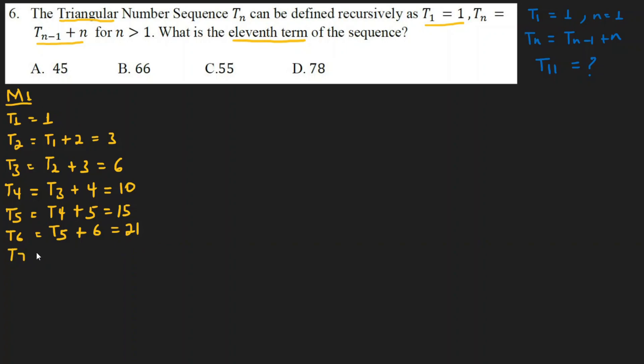T7 equals T6 plus 7, so 21 plus 7 equals 28. T8 is equal to T7 plus 8, so 28 plus 8 equals 36. T9 is equal to T8 plus 9, so 36 plus 9 equals 45. T10 is equal to T9 plus 10, so 45 plus 10 equals 55.